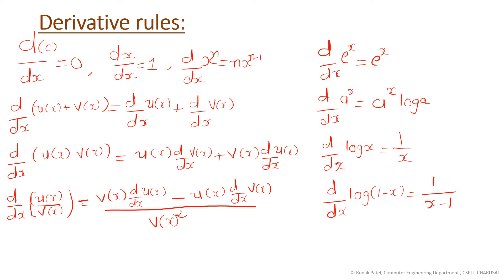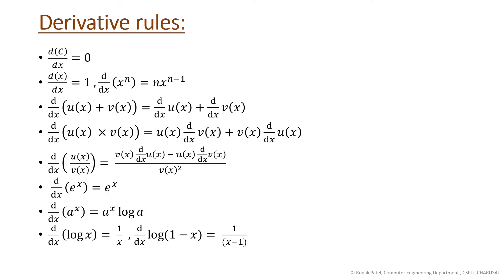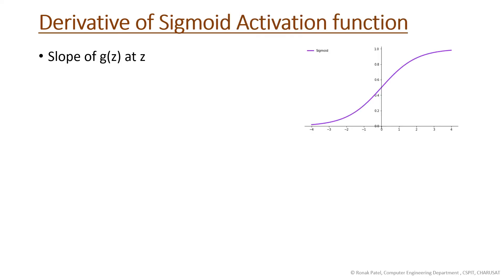These rules also help in the back propagation algorithm of neural networks. I have listed those derivative rules so you can refer to them. Now we will see the derivative of the sigmoid activation function. The equation of the sigmoid activation function is 1 upon (1 + e^(-x)).